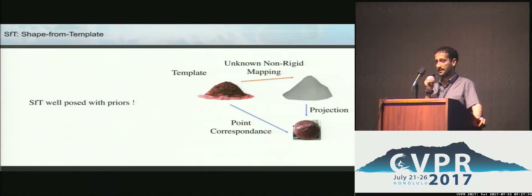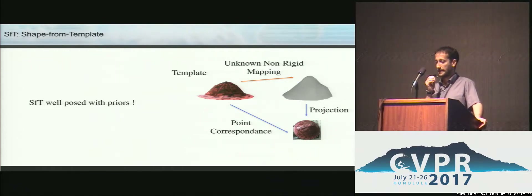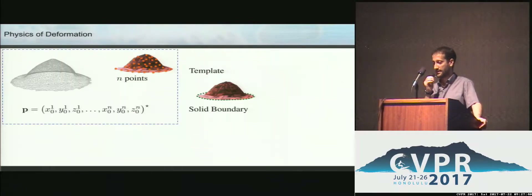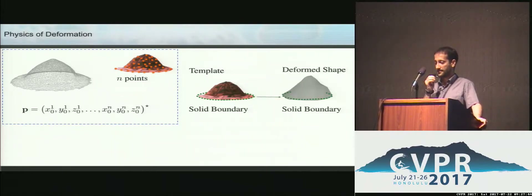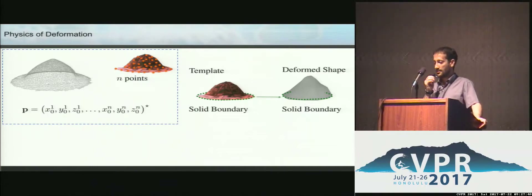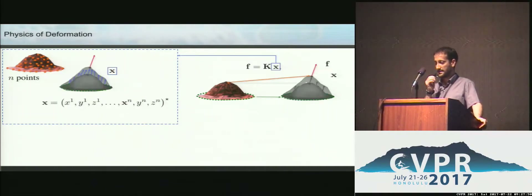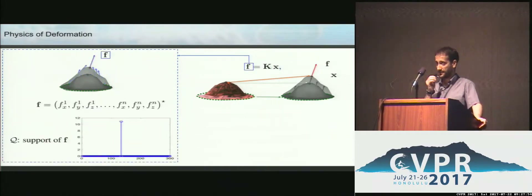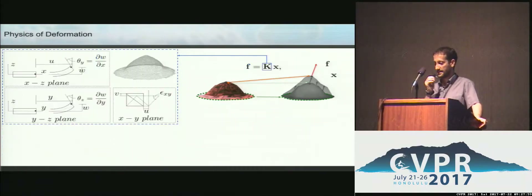If you have a template shape of endpoints represented by nodes that deform into some 3D shape, we assume that the displacement is linearly dependent on the deforming force, which has some support we denote Q. K is the matrix that encodes the physics of the deformation.